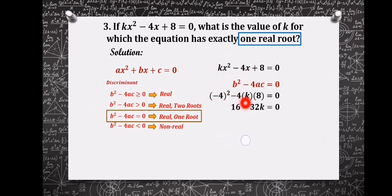We'll have (-4)² which is equal to 16, minus 4 times k is 4k, times 8 is -32k, equals zero. So 16 - 32k = 0.